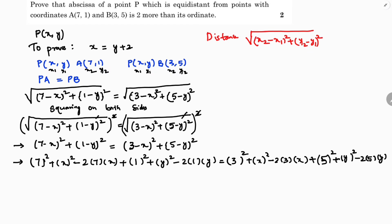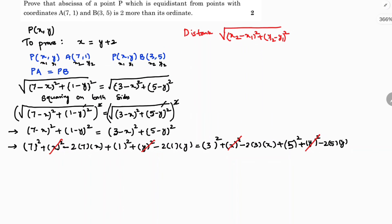Now observe that x² appears on both sides and y² appears on both sides, so they get cancelled. The leftover terms are: 49 minus 14x plus 1 minus 2y on the left, equals 9 minus 6x plus 25 minus 10y on the right. Wait — minus 10y becomes plus 10y after transposing, giving: 49 minus 14x plus 1 minus 2y equals 9 minus 6x plus 25 plus 10y.